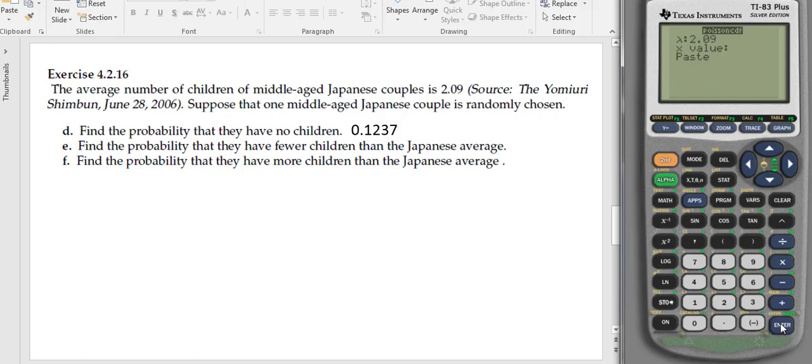Again, we put in our mean, and our x value that we're interested in is 2. This will add up all the values of 0, 1, and 2, the probabilities of those three things. When we hit enter, we get our answer of 0.6523. We look here and see this is a 3, so we round down.